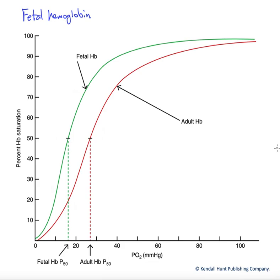This hemoglobin is very similar in structure to the adult version, but tends to have a slightly higher affinity for oxygen, as indicated by the left-shifted green curve here.